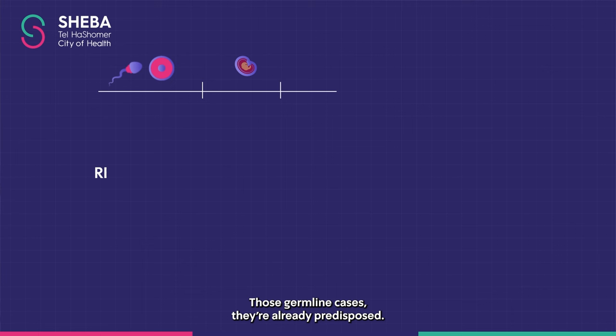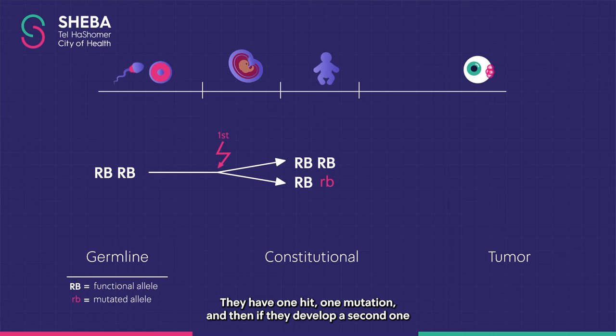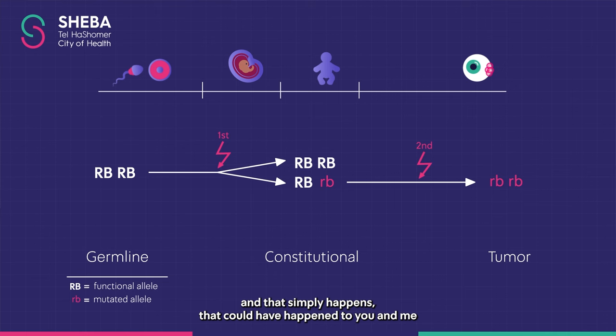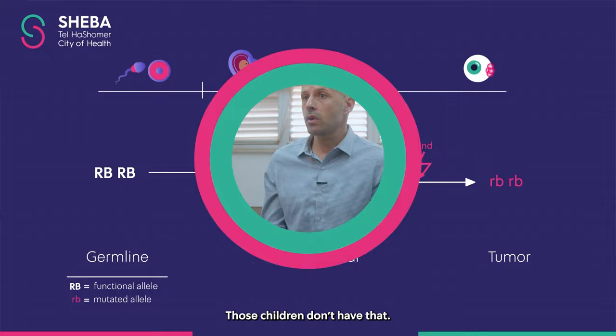Those germline cases are already predisposed — they have one hit, one mutation. If they develop the second one, which simply happens, it could have happened to you and me when we were children, but we had the second gene to protect us. Those children don't have that, and they develop the disease.